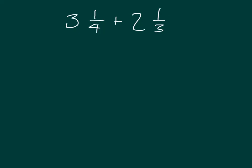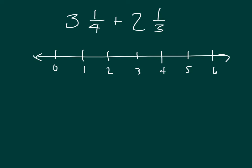Here we have 3 and 1/4 plus 2 and 1/3. It will help us to visualize this on a number line, so I will make a number line. As you see, I have placed whole numbers onto my number line: 0, 1, 2, 3, 4, 5, and 6.